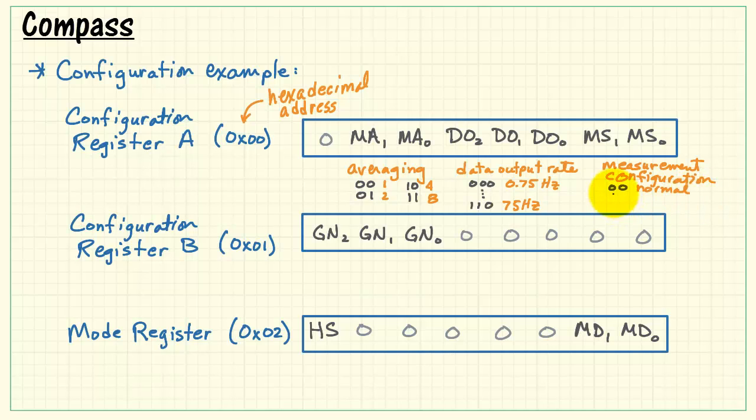These two bits, called the measurement configuration, are associated with either self-test or normal operation. The gray bit there needs to be 0 at all times.